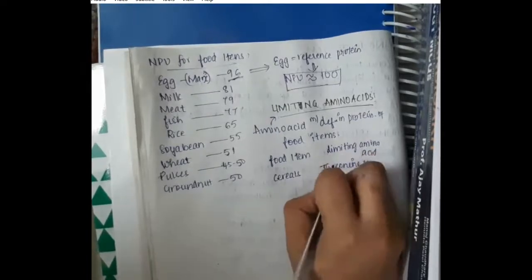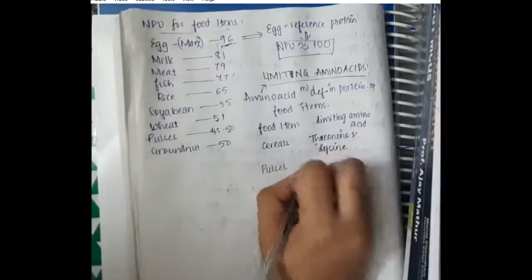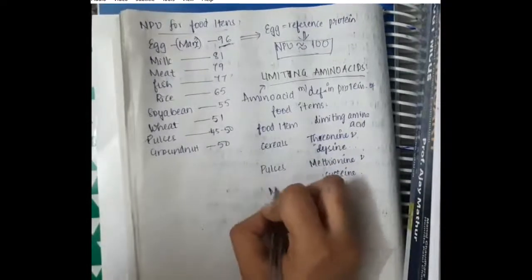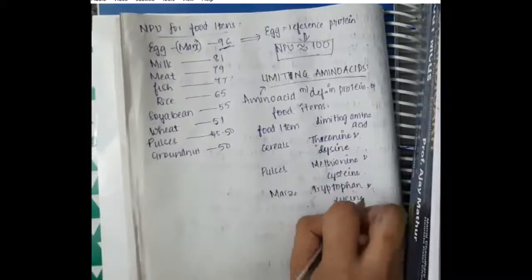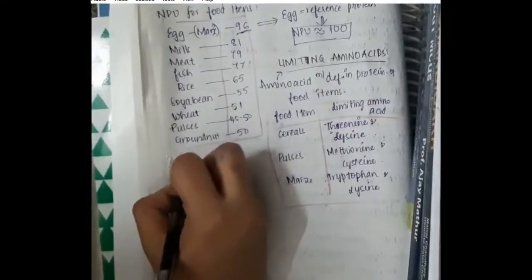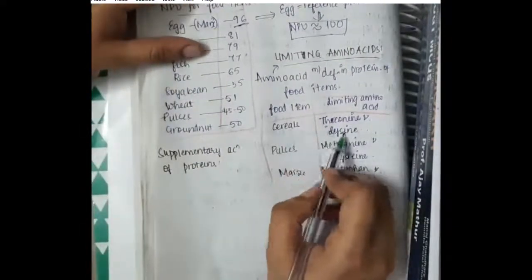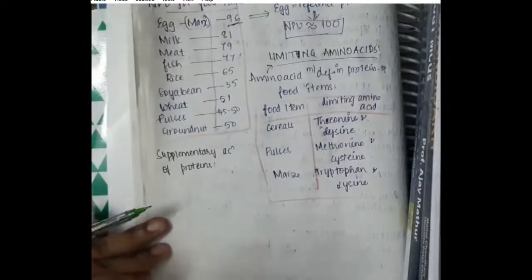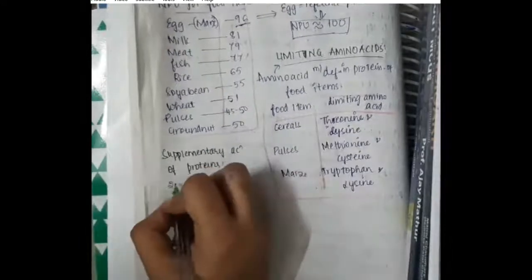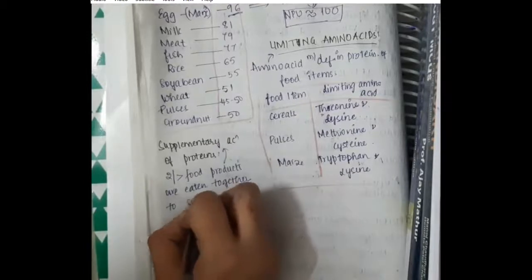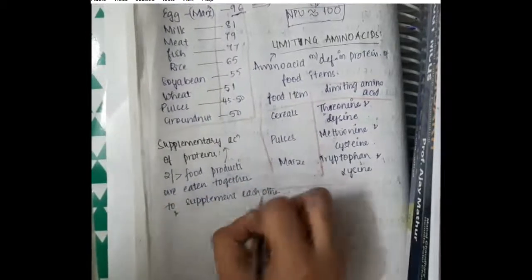In cereals, threonine and lysine are limiting amino acids. In pulses, methionine and cysteine are limiting amino acids. In maize, tryptophan and lysine are limiting amino acids. Because there are limiting amino acids in the foods we eat, we use the supplementary action of proteins — combining two or more food products so that one supplements the other and overcomes these deficiencies.